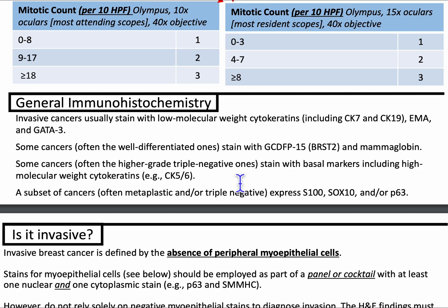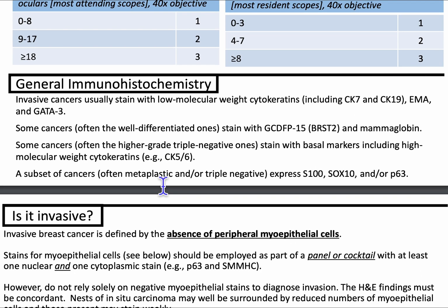Let's talk about the general immunohistochemistry of invasive breast cancers. They usually stain with low molecular weight cytokeratins including CK7 and CK19, EMA, and GATA3. Some cancers — often the well-differentiated ones — will stain with GCDFP15 and mammoglobin. Some cancers — often the higher grade triple negative ones — stain with basal markers including high molecular weight cytokeratins like CK5/6. A subset of cancers, often metaplastic and/or triple negative, express S100, SOX10, and P63.